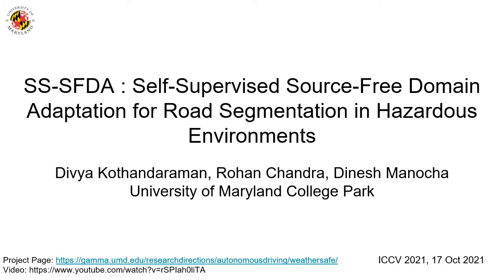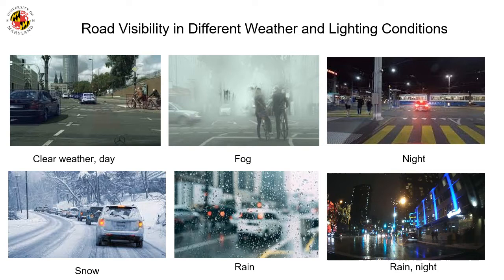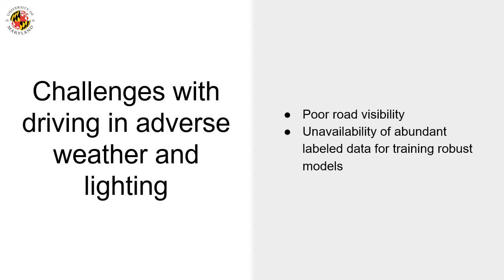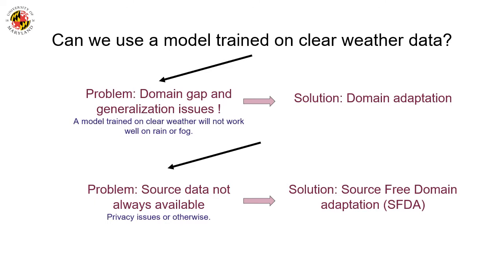In this slide, we show road scenes under different lighting and weather scenarios where it is hard not just for an autonomous vehicle to navigate, but also for human drivers. In addition to poor road visibility, one major challenge in road segmentation in adverse weather is the lack of ground truth annotations for road pixels. Due to domain gap and generalization issues, a model trained on clear weather data does not generalize well to rain or fog scenes.